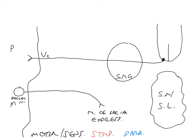The facial nerve also has a parasympathetic part. The parasympathetic pre-ganglionics which go into the facial nerve are found in a nucleus called the superior salivatory nucleus. The superior salivatory nucleus provides the facial nerve with parasympathetic pre-ganglionics, which then leave the facial nerve and enter the submandibular ganglion, where they synapse upon parasympathetic post-ganglionics.